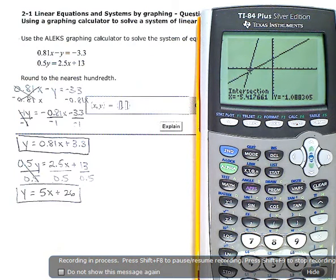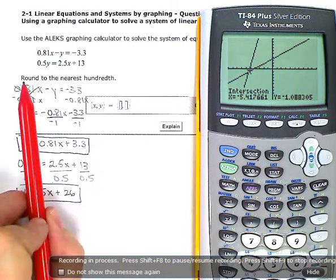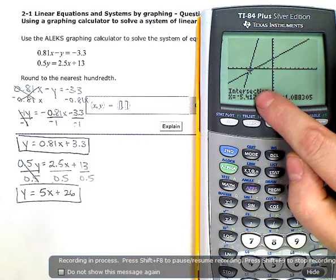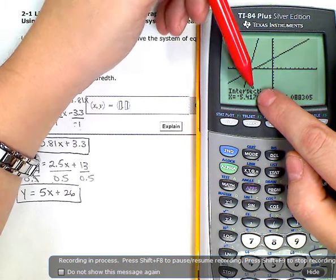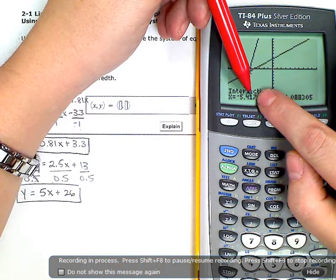So, to enter my solution here, it says round to the nearest hundredth. So, if I'm looking at my x coordinate, I want to keep two decimal places. And since this one, the seven, is larger than five, I have to bump this one up to negative 5.42.